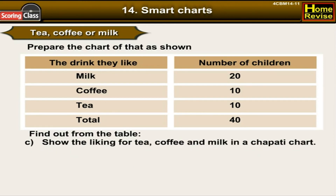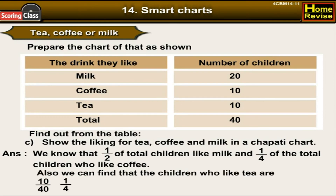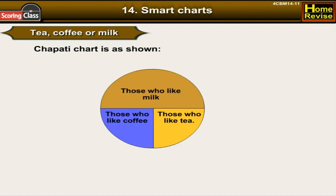Show the liking for tea, coffee, and milk in a chapati chart. Half the children like milk, one fourth like coffee, and children who like tea are 10/40 = one fourth of the total. The chapati chart is divided to show those who like milk as half, and those who like coffee and tea each as one fourth.